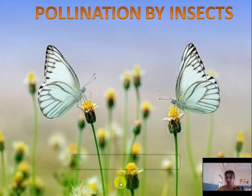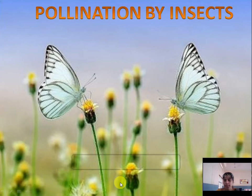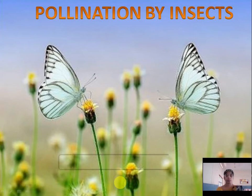Like this way, pollination occurs in the case of insects. Pollination by insect is also known as entomophilous type of cross pollination. In this type of pollination, insects help to transfer pollen grains from one flower to another plant's flower. This is the most common method of pollination.